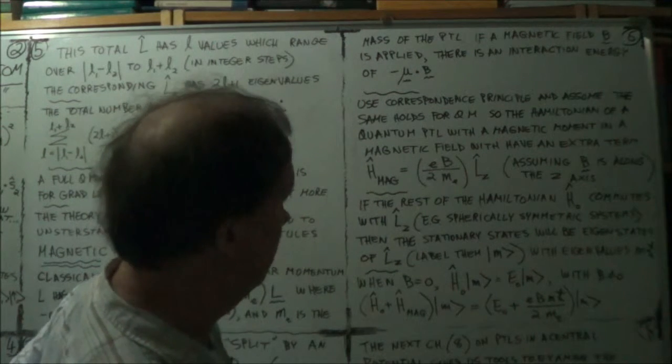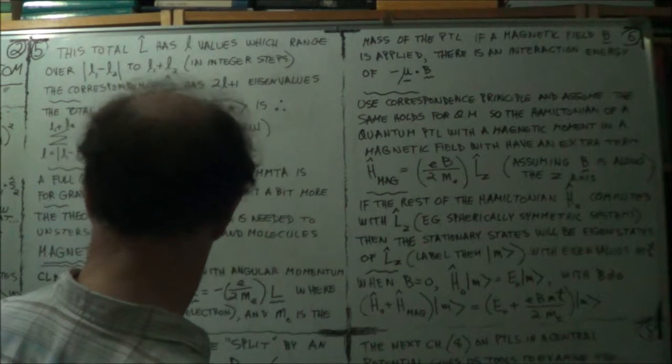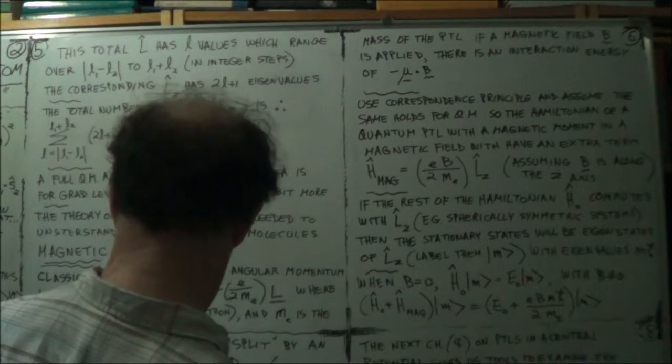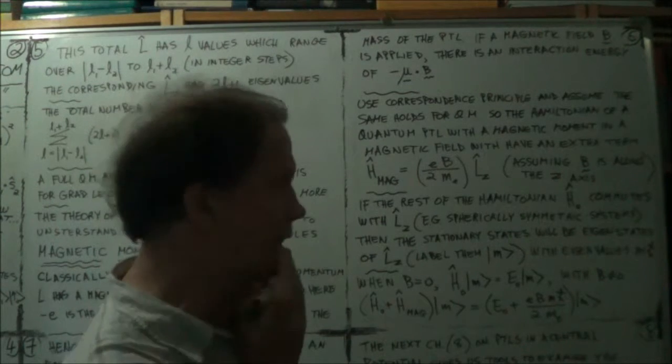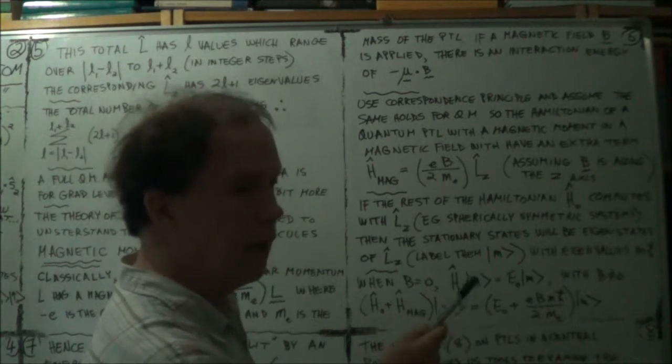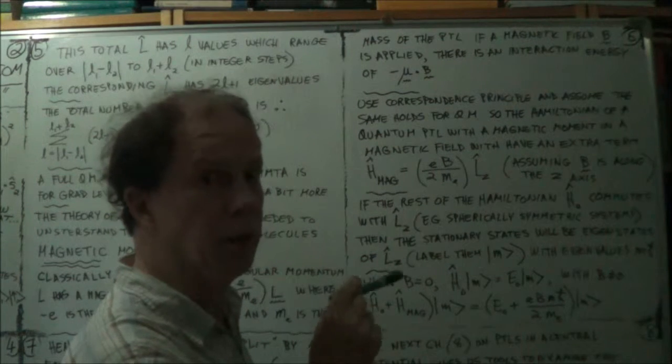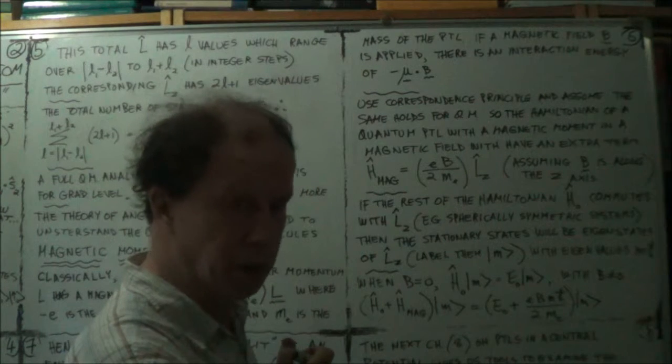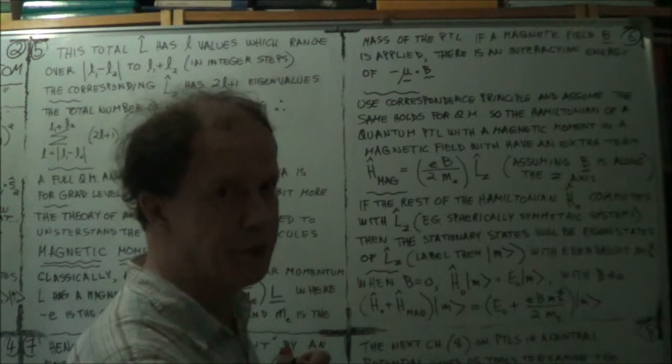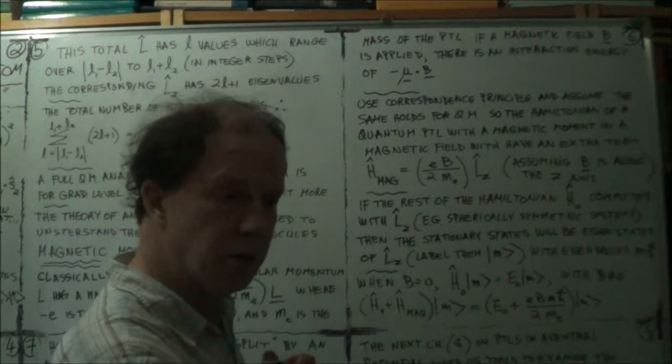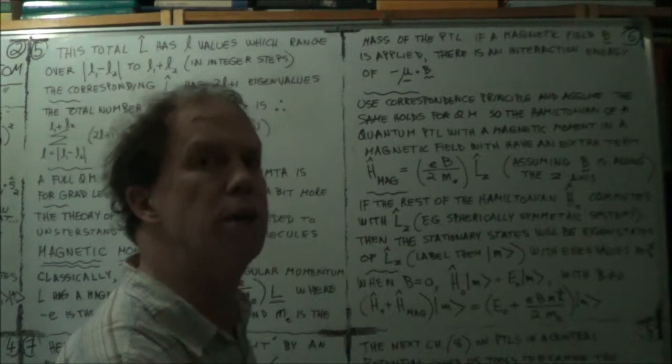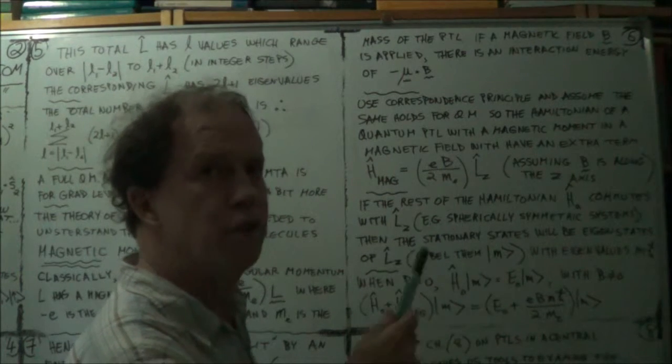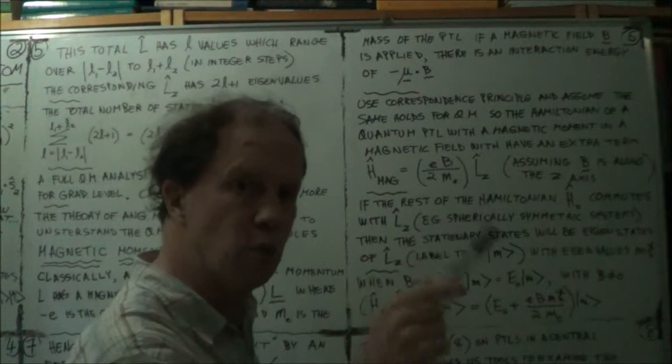Now, how many m's are there? If your angular momentum eigenvalues are L, little l. Remember, for a given L, the m's, the components, along the z-axis, they can range from minus L to L. So, there'll be 2L plus 1 different m values. So, these m's here range over... They have 2 little l plus 1 different values.